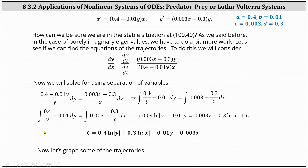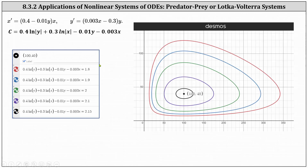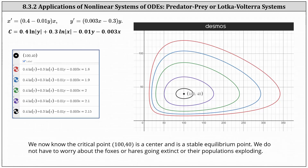Now let's graph some of the trajectories. Using C equals 1.8, 1.92, 2.1, and 2.15, notice the trajectories are closed loops around the critical point (100, 40). We now know the critical point (100, 40) is a center and is a stable equilibrium point. We do not have to worry about the foxes or hares going extinct or their populations exploding.